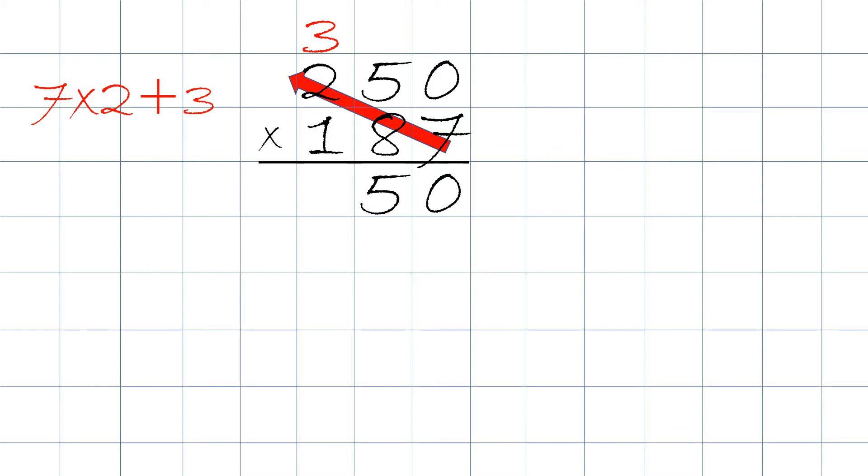Next we put a zero right up here, and then we take zero times eight. The answer will be zero. Put it right up here.